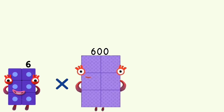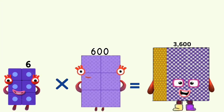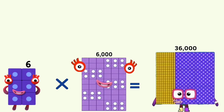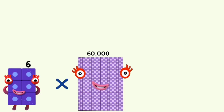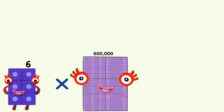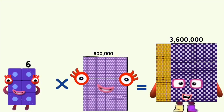6 times 600 equals 3,600. 6 times 6,000 equals 36,000. 6 times 60,000 equals 360,000. 6 times 600,000 equals 3,600,000.